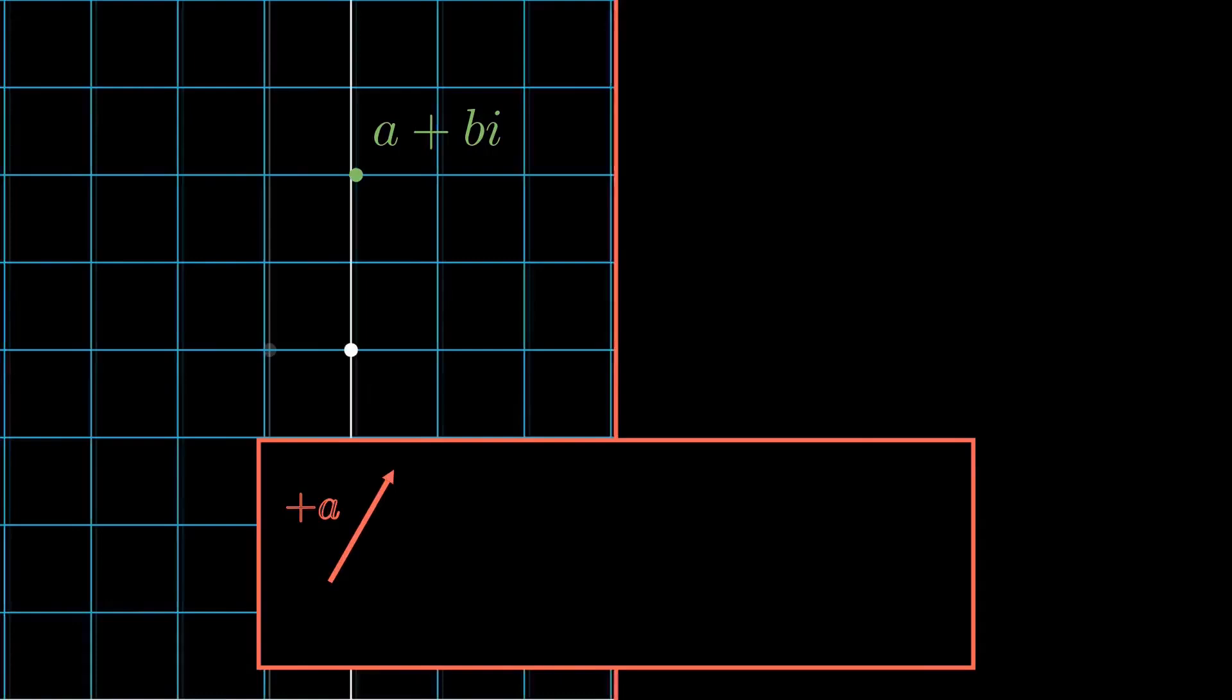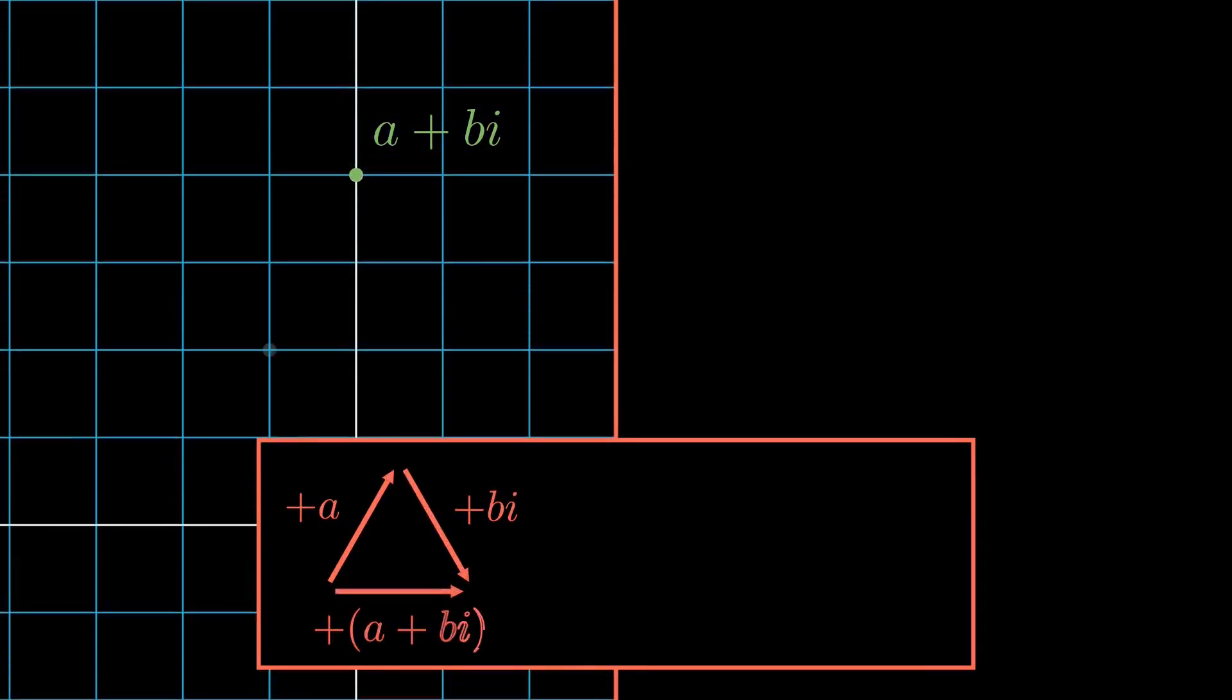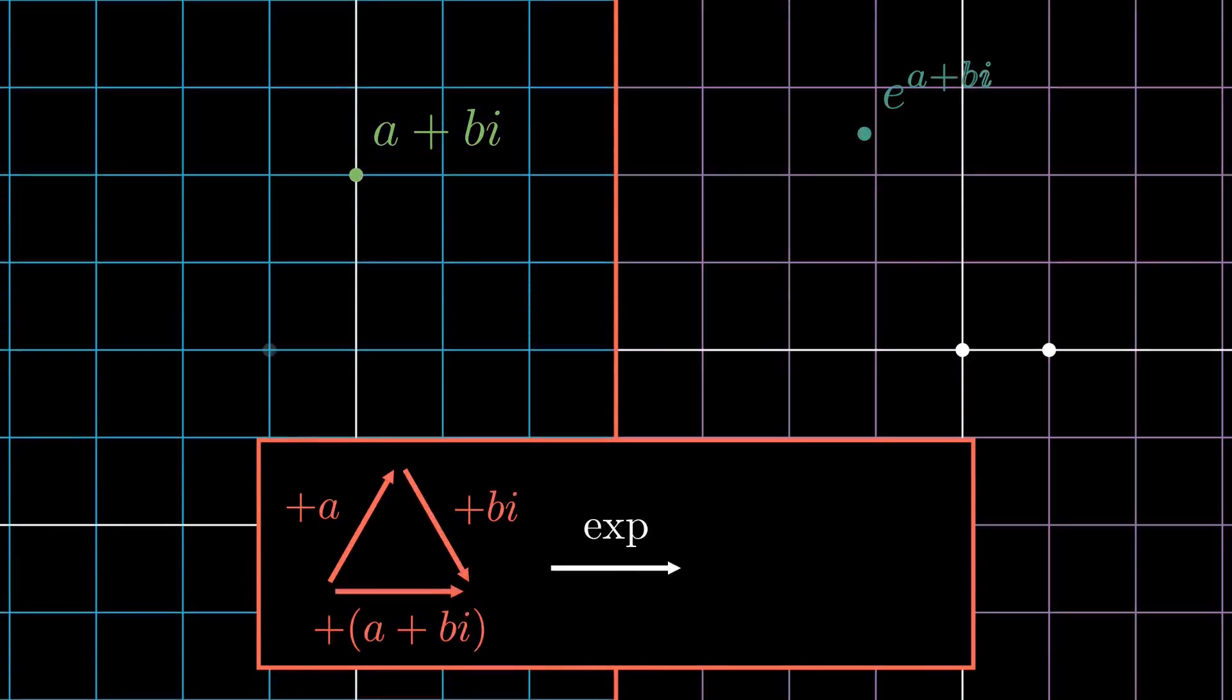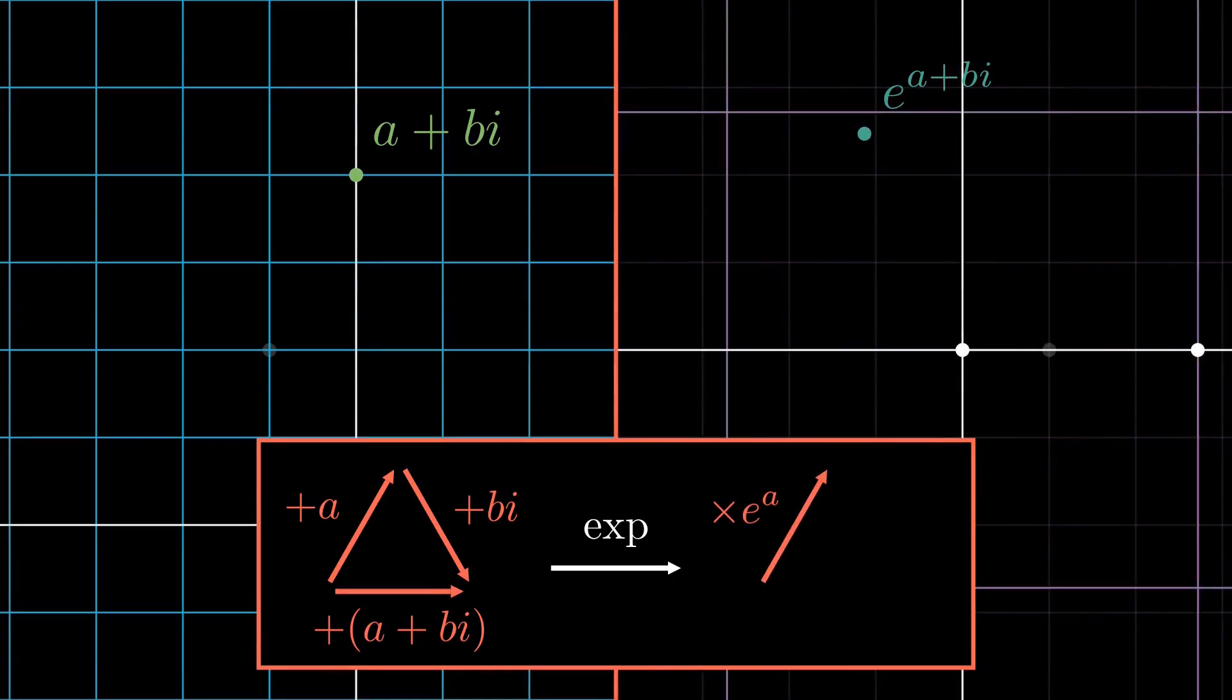So, just like how exponentiating a complex number, a plus bi, corresponds to the composition of a stretch action and an orthogonal rotation action,